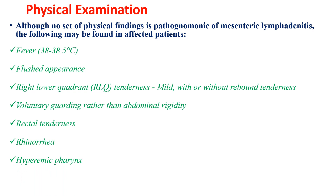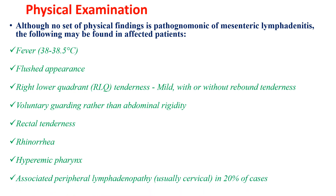Hyperemic pharynx is also present if there are viral causes of upper respiratory tract infection as a risk factor for mesenteric lymphadenitis. Associated peripheral lymphadenopathy is seen in around 20% of cases, mainly cervical.